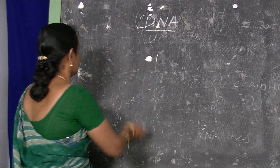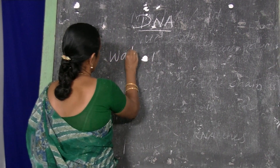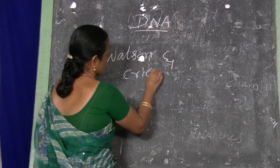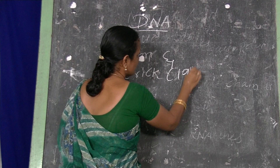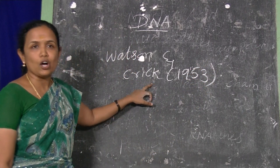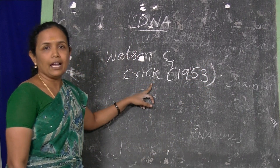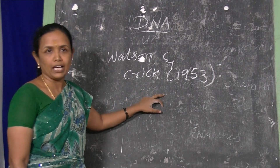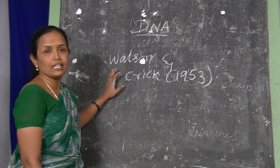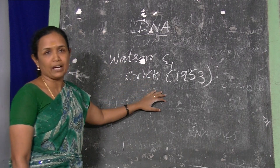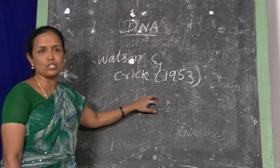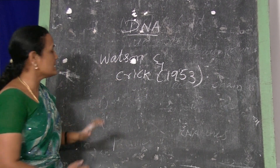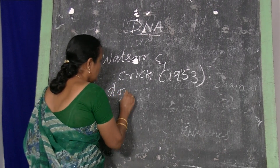Watson and Crick, in the year 1953, designed the structure of DNA and the structure of DNA is called the Watson and Crick model. Watson and Crick were awarded the Nobel Prize in the year 1962 for this work. According to the Watson and Crick model, DNA is in the form of a double helix.